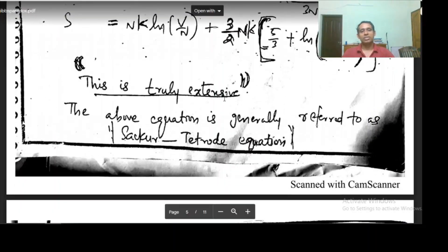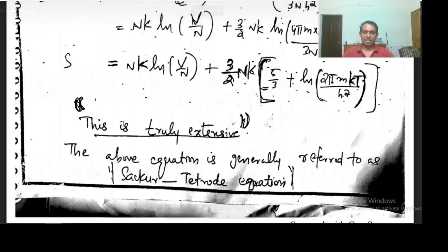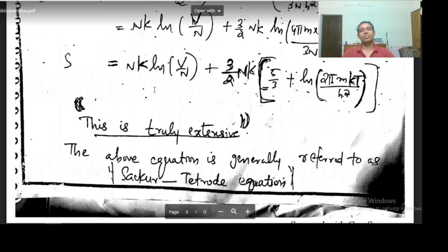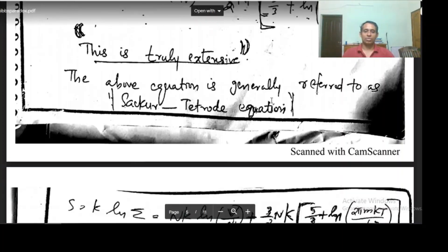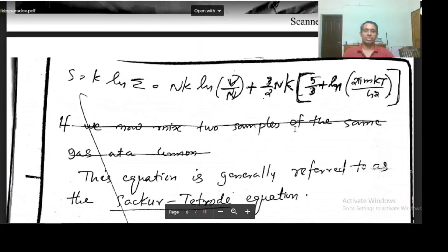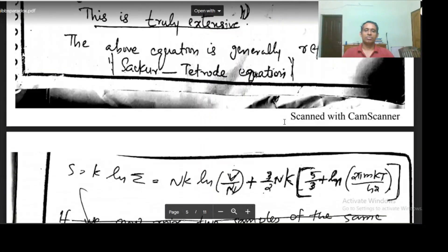This equation is referred to as the Sackur-Tetrode equation. This is the correct expression for entropy, which is the Sackur-Tetrode equation, written in this form.